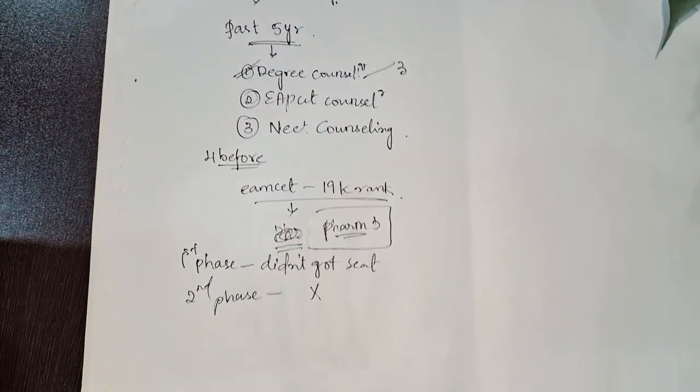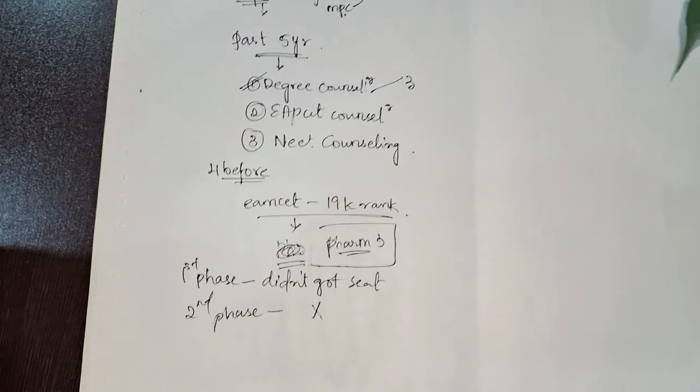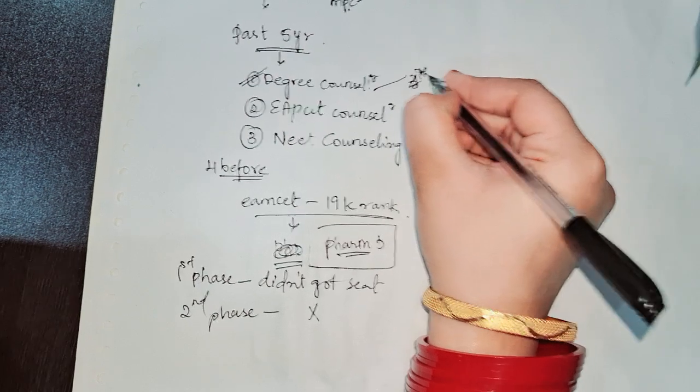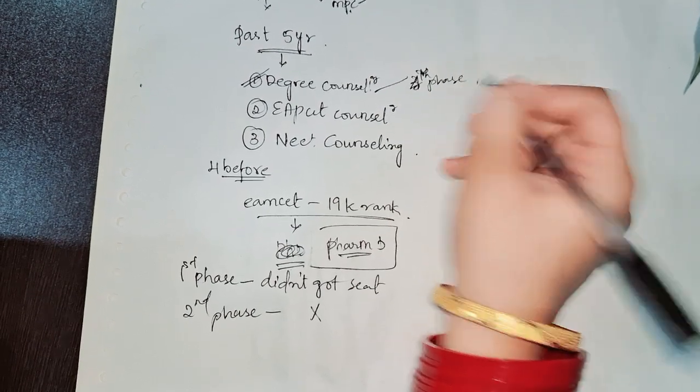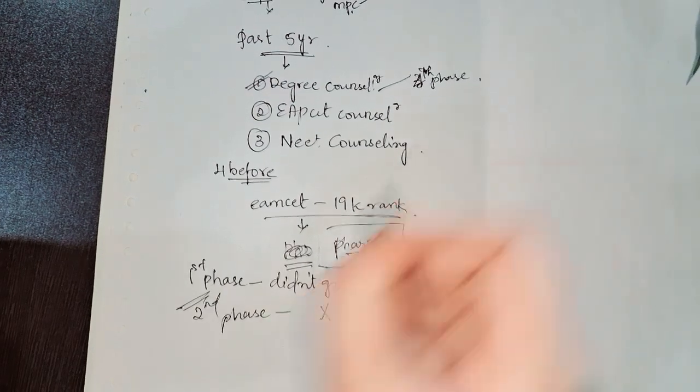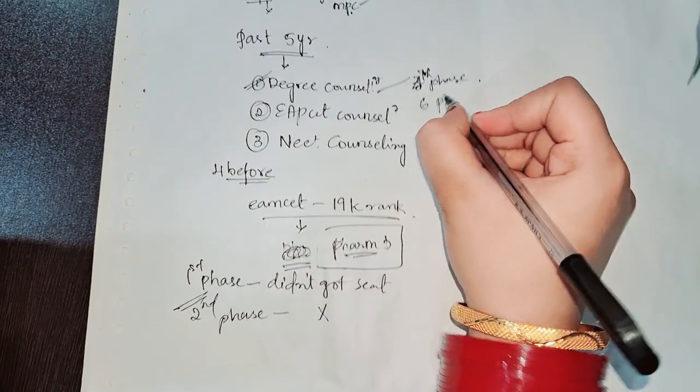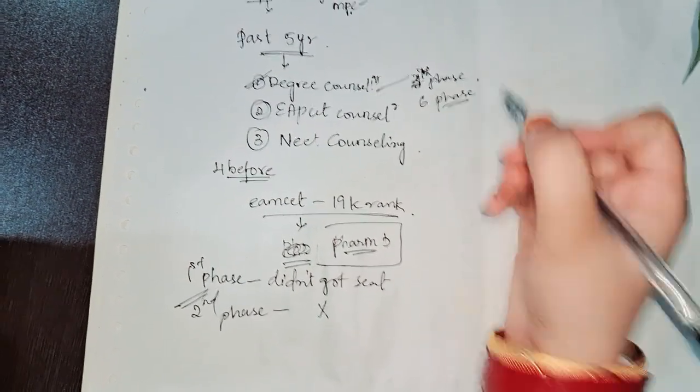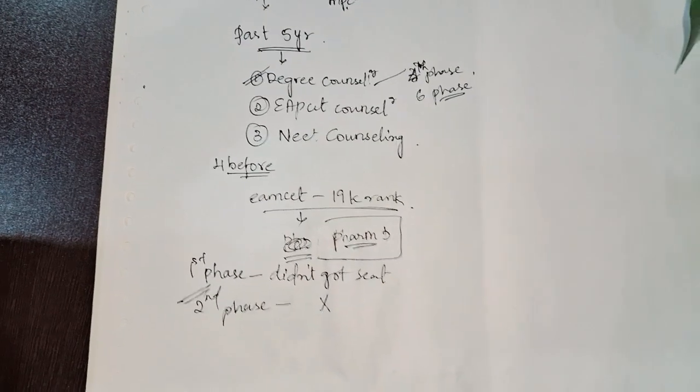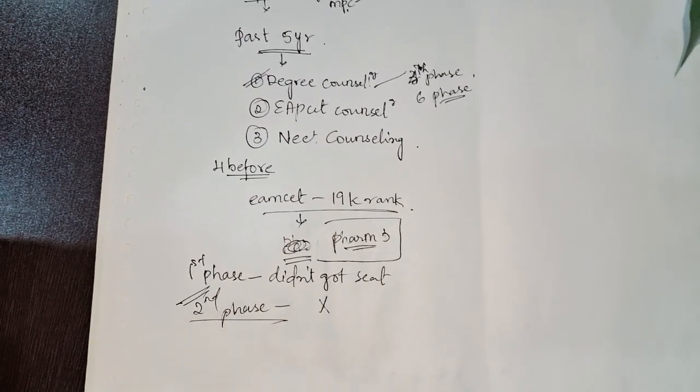The fourth phase was completed during that time, and by the time she attended the second phase here, six phases were completed because that was new and people didn't know about it, so they extended the phases. But by that time second phase, she didn't get a seat and got exhausted.